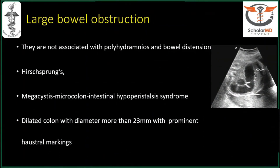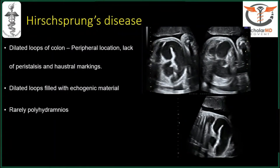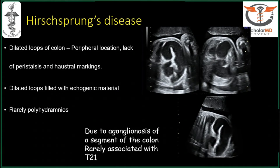Moving to large bowel obstruction — these are not associated with polyhydramnios and bowel distension in the same way. Causes include Hirschsprung disease, megacystis-microcolon-intestinal hypoperistalsis syndrome, and dilated colon with diameter more than 23 mm with prominent haustral markings. Hirschsprung disease: prenatal diagnosis is difficult — you may think on those lines when you see dilated loops of colon with peripheral locations, lack of peristalsis and haustral markings which come late in the third trimester. Proximal dilated loops can be seen, with echogenic material in dilated loops. Rarely, polyhydramnios. This happens because of aganglionosis of a segment of the colon and is associated with trisomy 21.